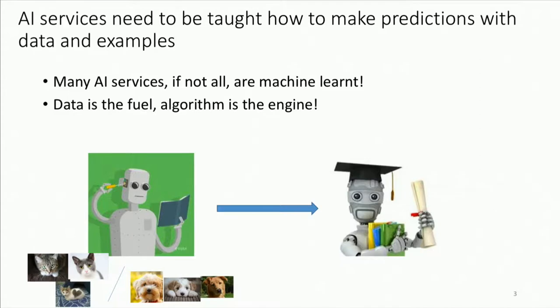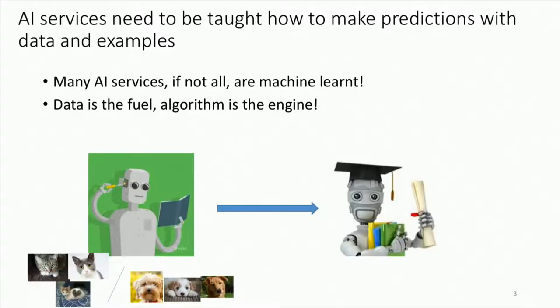Before getting into the issues with biases, let me give a quick overview of how machine learning models are built and what the pipeline looks like. It's very important to understand the pipeline in order to understand where in the process we could potentially introduce undesirable biases or errors, even without our own knowledge. Many machine learning systems need to be taught — they learn from data. Data is really the fuel; algorithms are the engine.